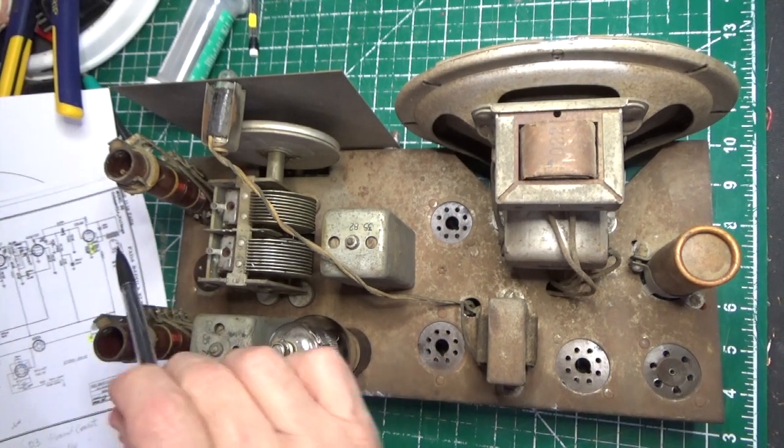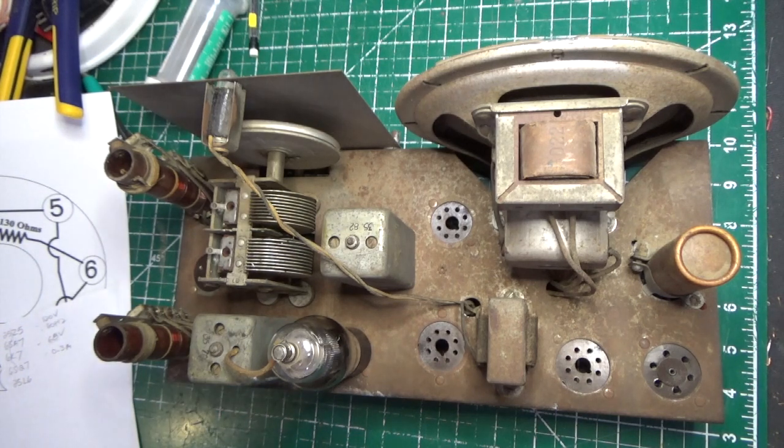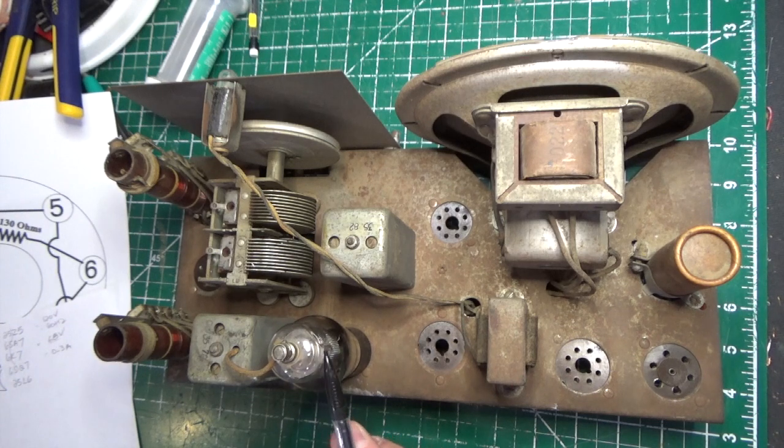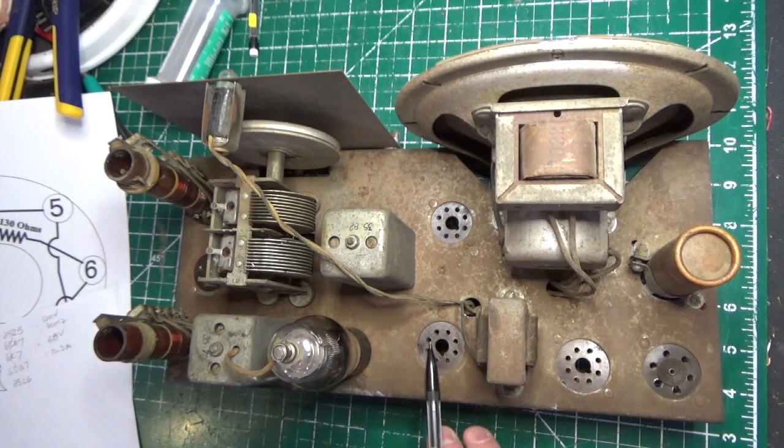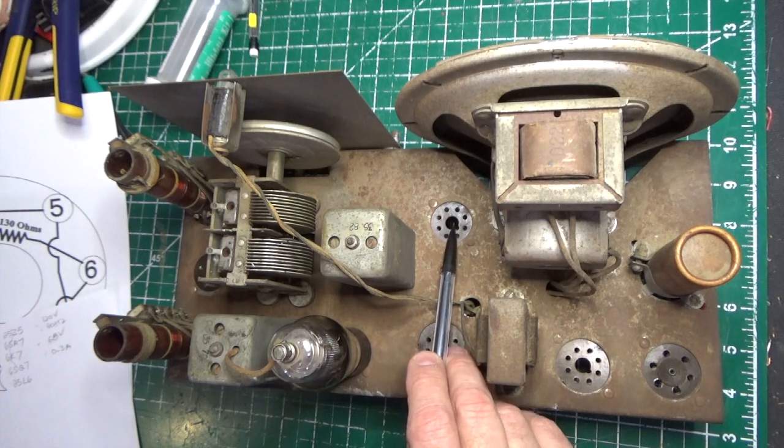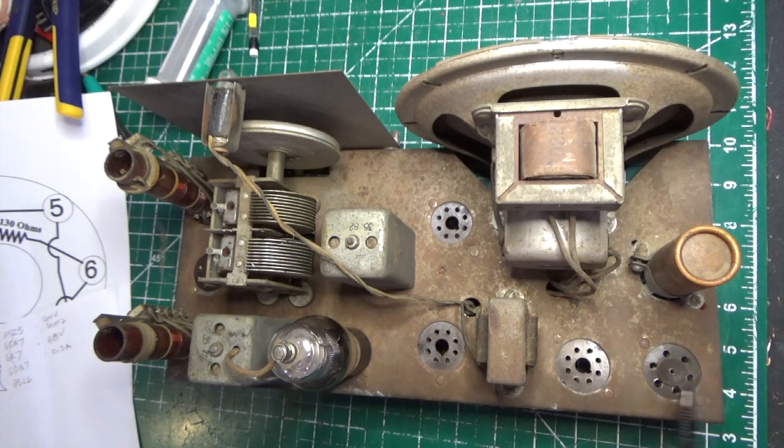So that we know. We also know that the socket over here next to the antenna is going to be a 6SA7. We know that this is going to be a 6K7, we know that that's our ballast, that's going to be our output tube 25L6, and this is going to be a 6SQ7. So that's our tube lineup, and of course this is our 25Z5 rectifier.